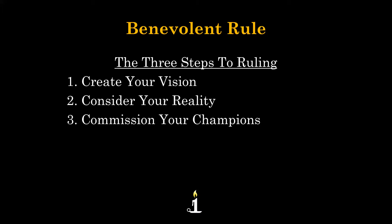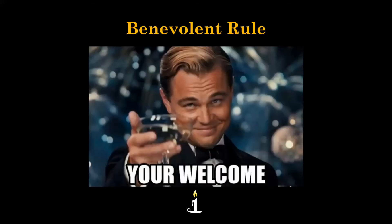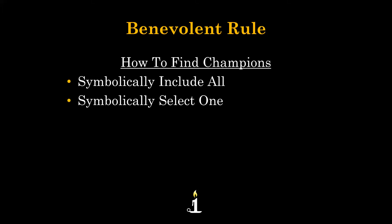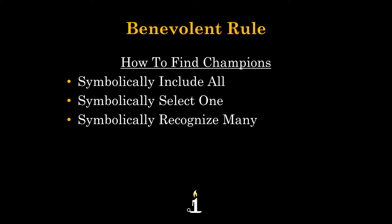So there are your three steps to ruling: create your vision, then consider your reality, and then commission your champions. Going back to how to find your champions — you need to have those champions if you're going to achieve a vision as a ruler. We've seen you need to symbolically include everyone, then select one location that represents all of what you're about, and finally you want to symbolically recognize many.